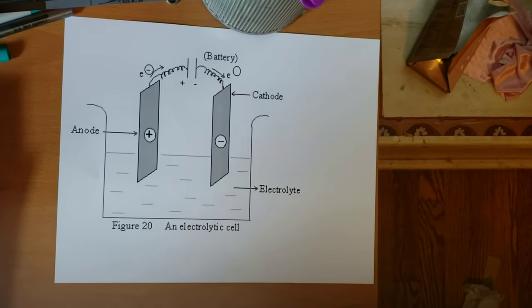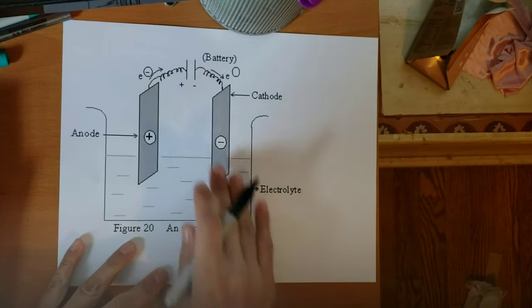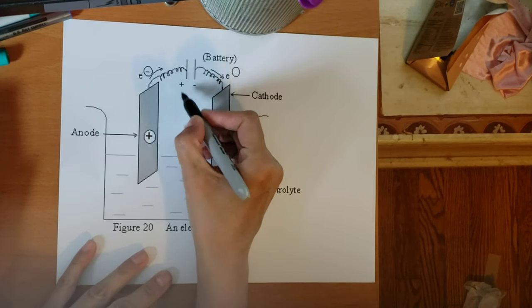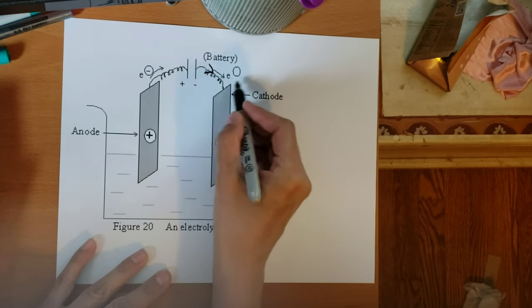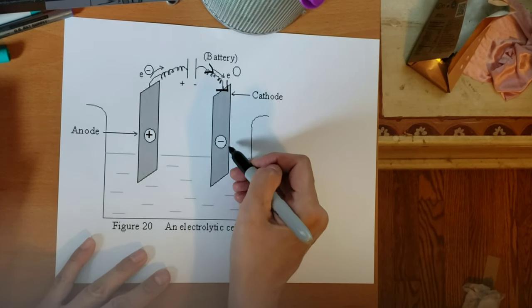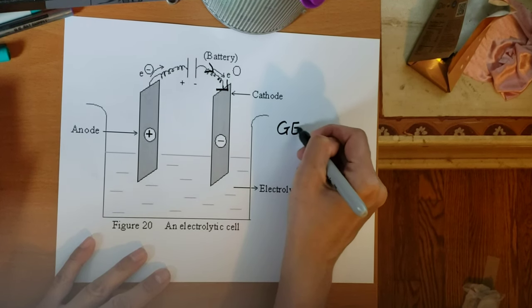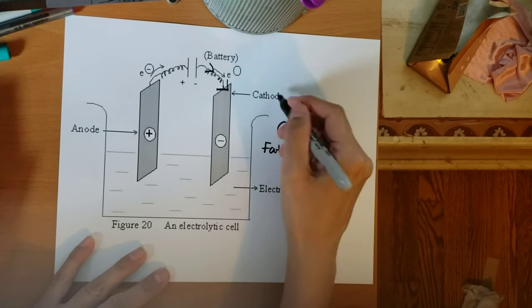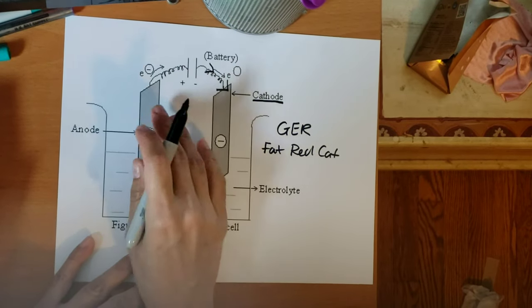Let's describe how an electrolytic cell works. The first thing you want to do is look for the battery. You want to use the charge to determine how the electrons move. Electrons are negative and are going to come out of the negative end of the battery. This is a non-spontaneous reaction, so negative electrons are forced to go to the negative electrode. Electrons are gained at this electrode — the gain of electrons is reduction — and this is still called the FAT-RED-CAT, so this is our cathode.